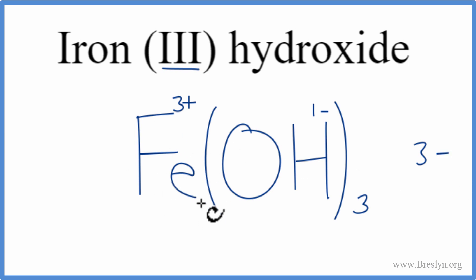One of the irons, that's 3+. 3+, 3-, net charge is zero, we're good. This is the correct formula for iron (III) hydroxide.